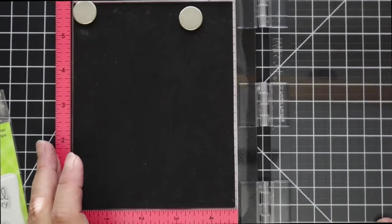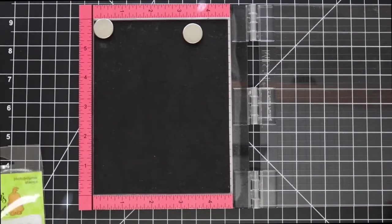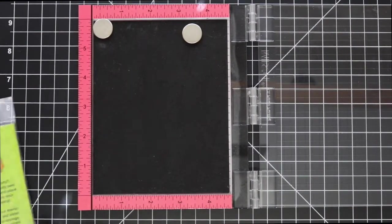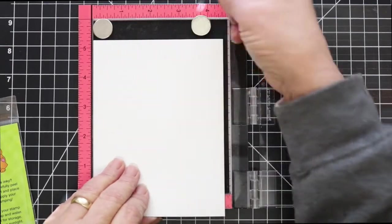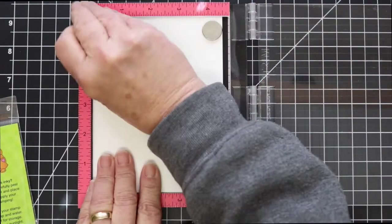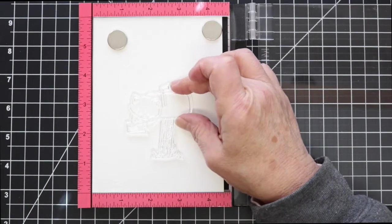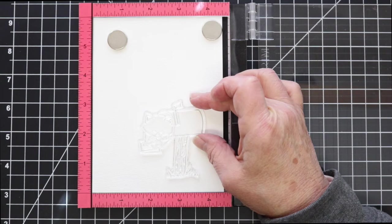I'm going to be stamping this on some Arches cold press watercolor paper so I'm going to use my mini MISTI. Since the paper has quite a bit of texture to it, I find that using the MISTI will give me a better impression and I can stamp it multiple times if needed.